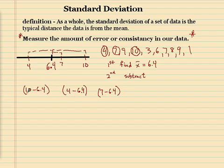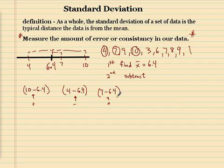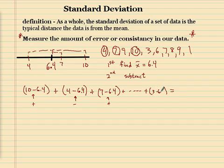But we have a problem. This one's going to be a positive number, but this one's going to be a negative number, because smaller minus bigger gives us a negative number. And if you sum up all these differences — say 3 minus 6.4 — if you do all of these, you'll get 0. So I can't find all the differences and get an average, which I would like.